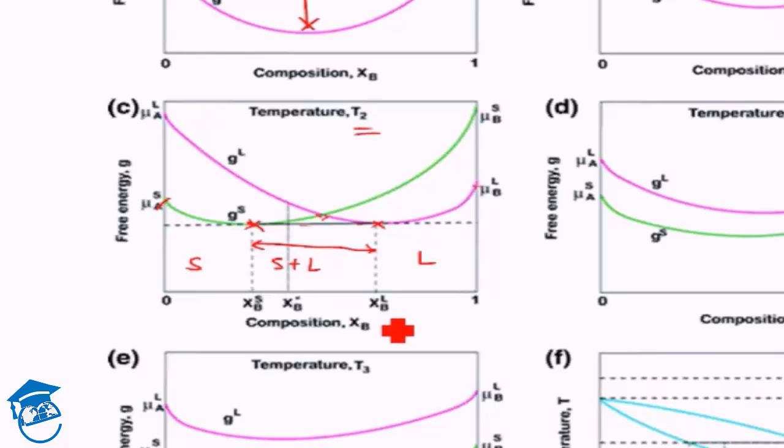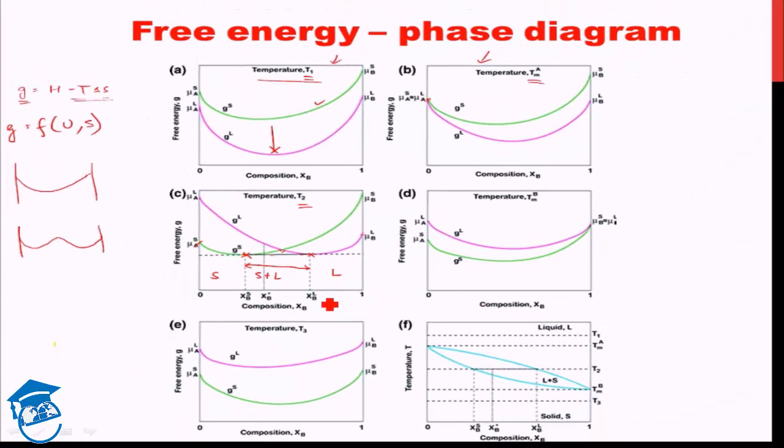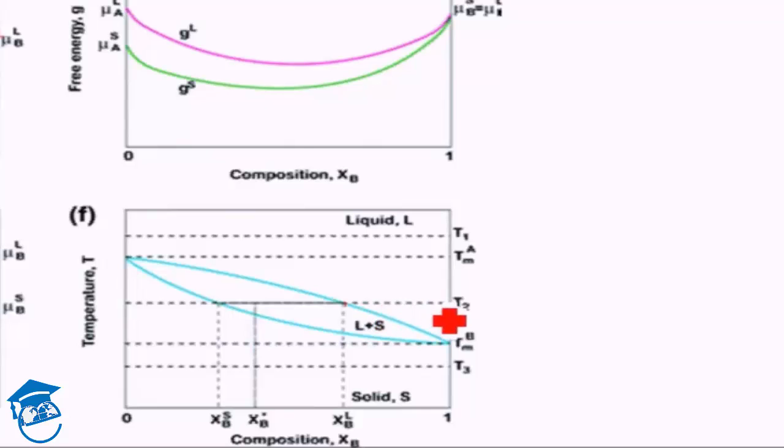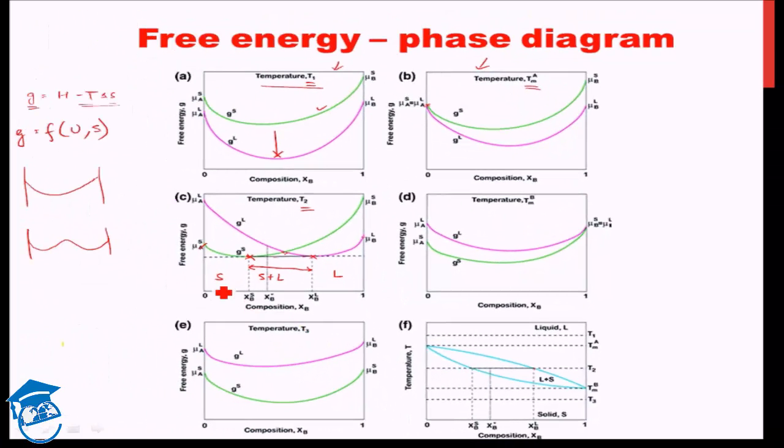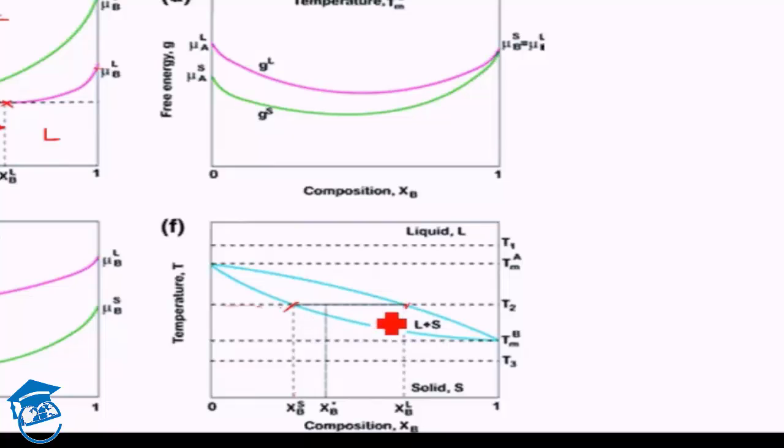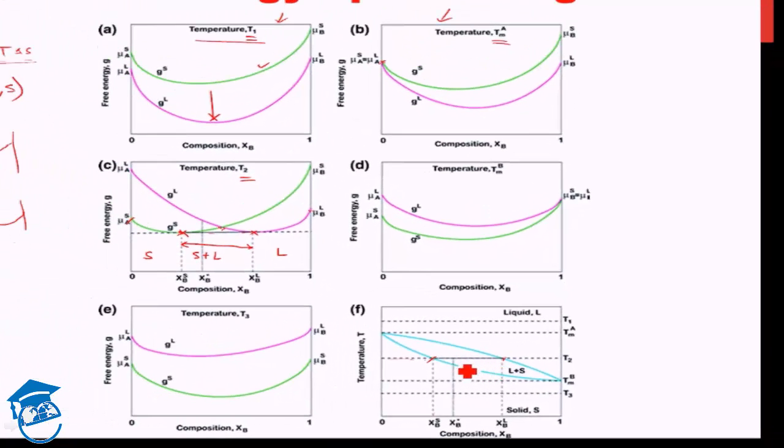Corresponding to this, at T2, let's go here. At T2, till XLB we will have liquid. In this region till XBS we will have solid, and anywhere between XLB and XSB, this region, we have solid and liquid coexisting. This gives you the two-phase region. For the two-phase region, you need to know that the free energy is further reduced by the two phases coexisting.